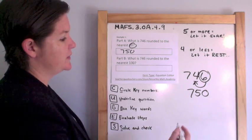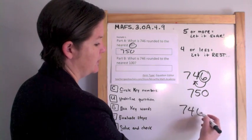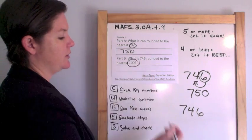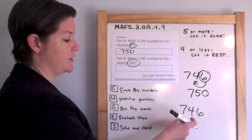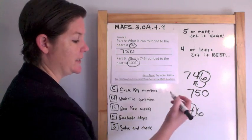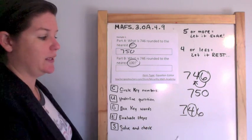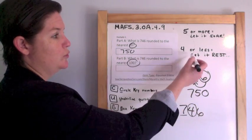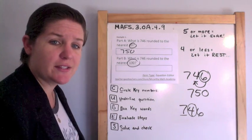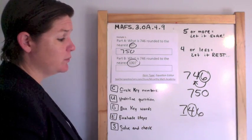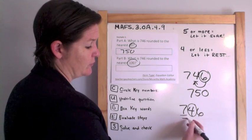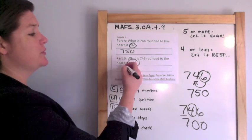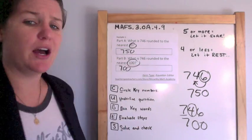Part B: What is 746, same number, rounded to the nearest hundred? So find the hundreds place and underline it. Ones, tens, hundreds. Boom. Spotlight to the right. Okay, and this is four or less, you better let it rest. So let it rest. That means that the seven rests and everything else becomes a zero. So, seven hundred.